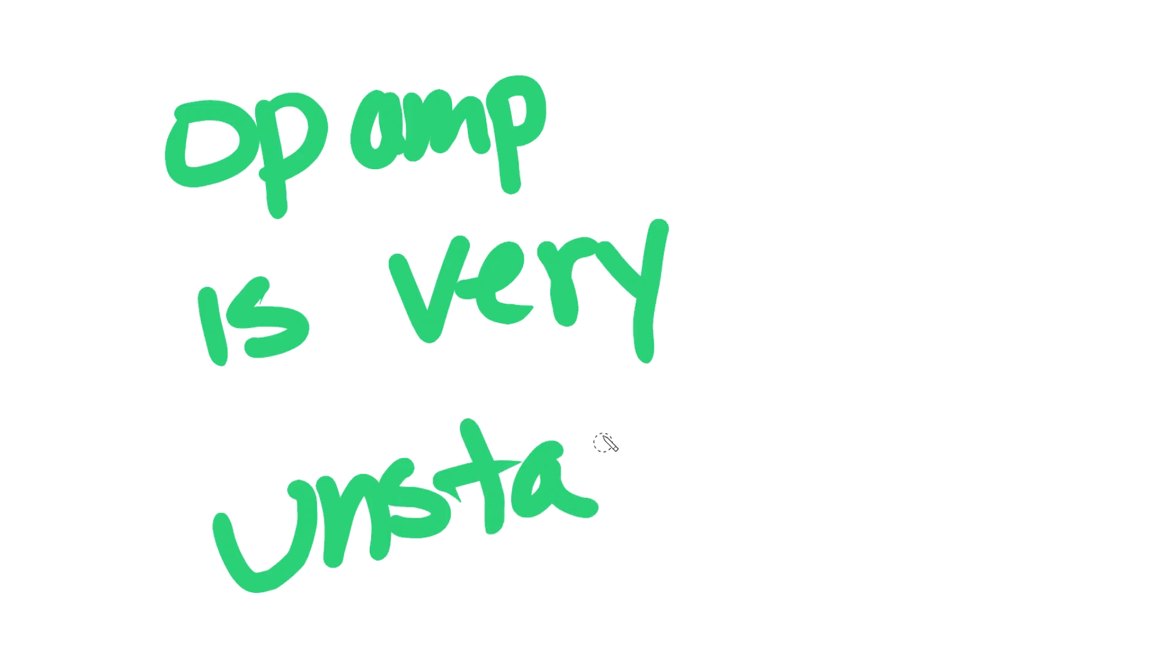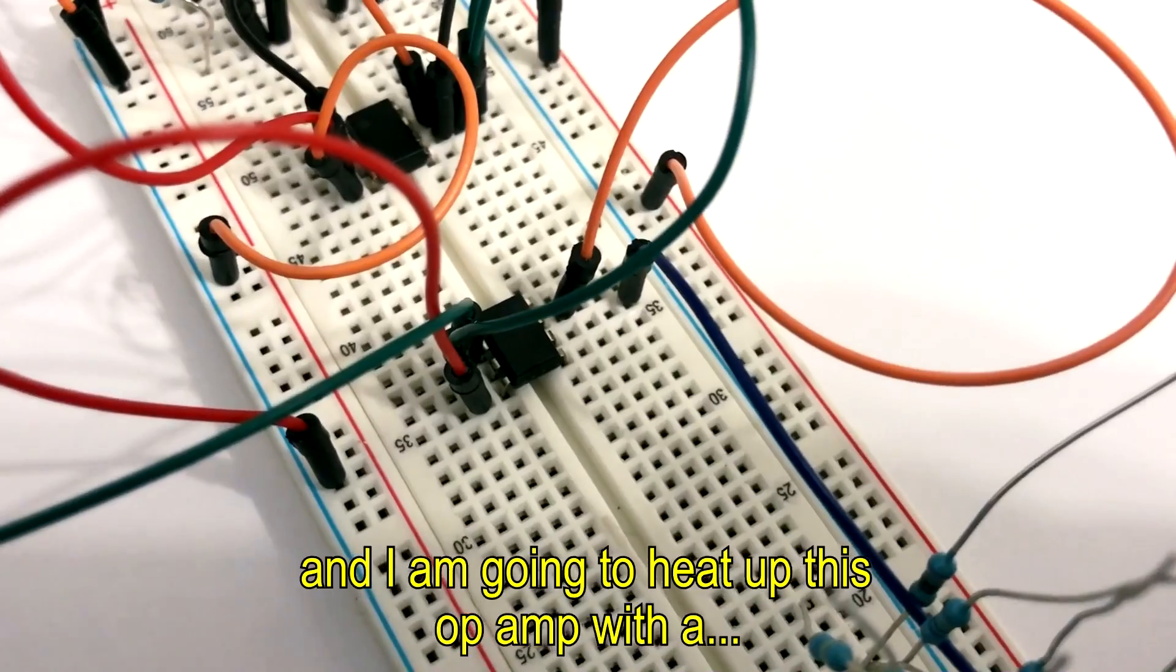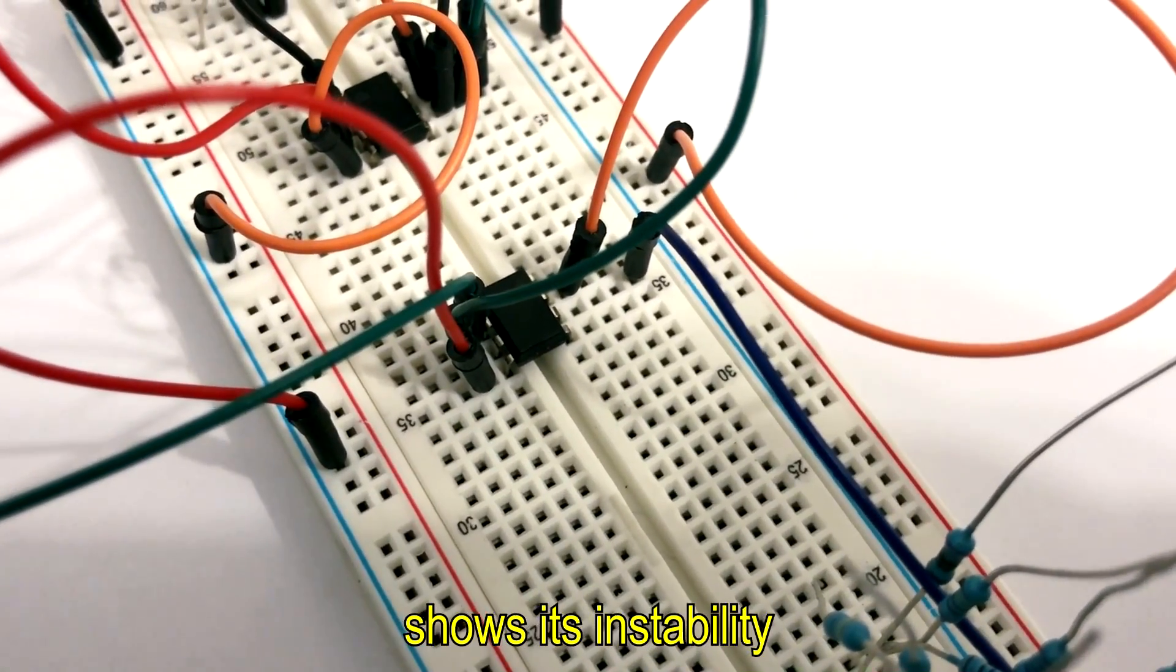Its instability can be shown when the op-amp is heated up. So this is the circuit and I'm going to heat up this op-amp with a hair blow dryer and see how the gain shows its instability.